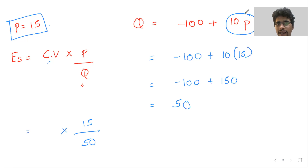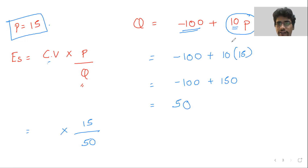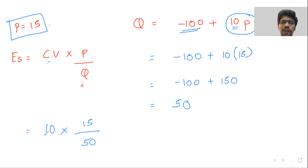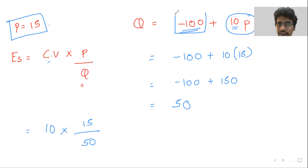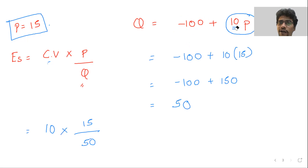The part that is free — where there is no variable — you do not need to look at that. Where there is a variable, that is the part to look at. Here, P is a variable and 10 is its coefficient. So you take this 10 and place it in the formula. If it's plus 10, write plus 10; if it's minus 10, write minus 10. Whatever coefficient is there, directly pick it up — that is your coefficient variable. The free term without a variable is only needed for equation solving, not for the elasticity formula.